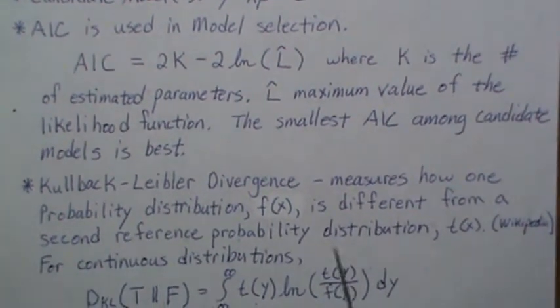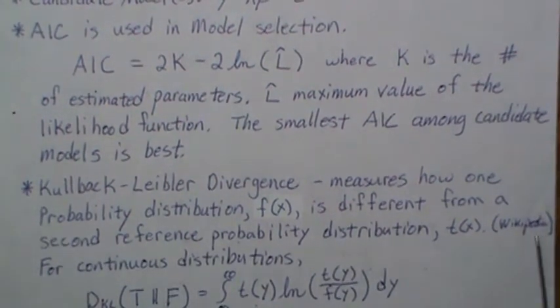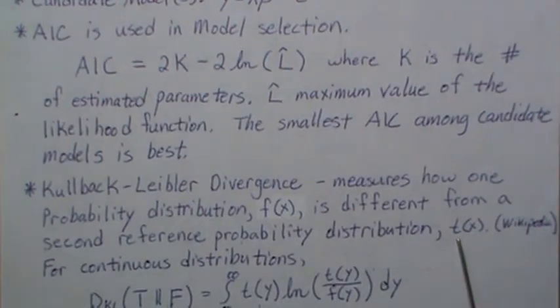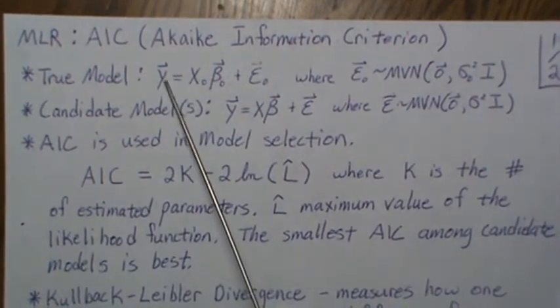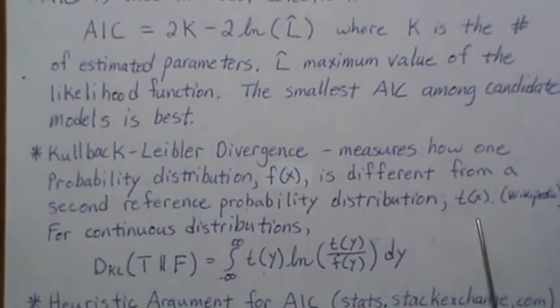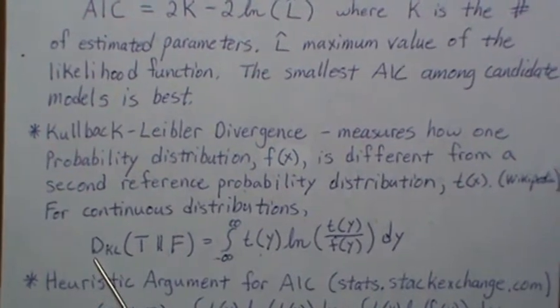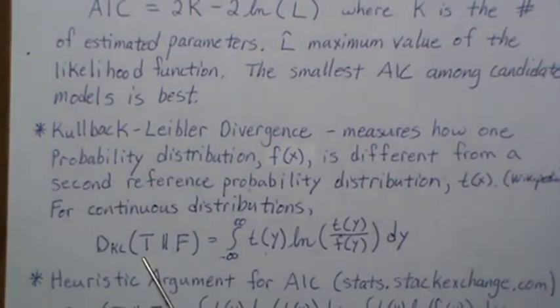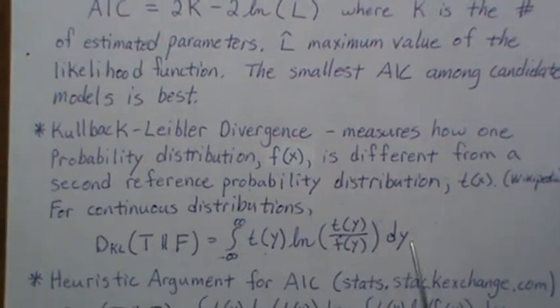I'm going to call it T(X)—the T stands for the true model. There's some distribution that this follows, and then we're fitting candidate models F(X). For the continuous case, the Kullback-Leibler divergence of F from the true population is the integral of T(Y) ln(T(Y)/F(Y)) dY.